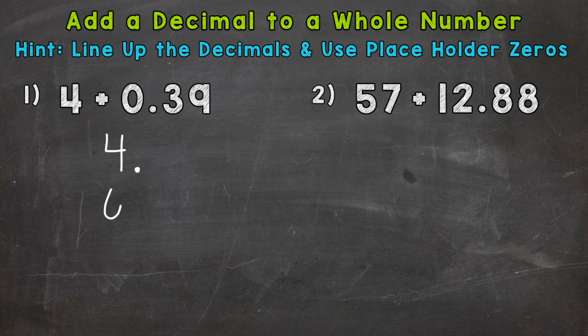So now we can line up the 39 hundredths. So lining up that decimal lines up all the places for us. And it looks a little offset there, but we can use placeholder zeros in order to make both numbers go to the hundredths. And now everything's lined up. Now, placing those zeros to the right of a decimal doesn't change the value of that four. It still has a value of four.